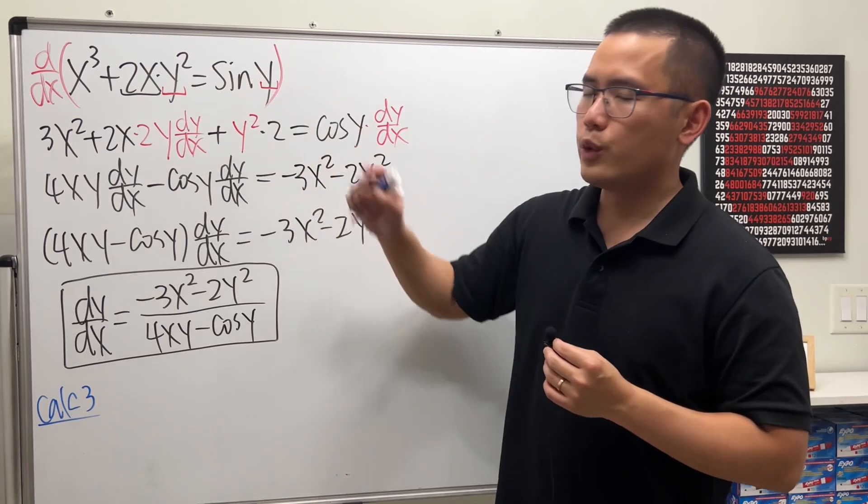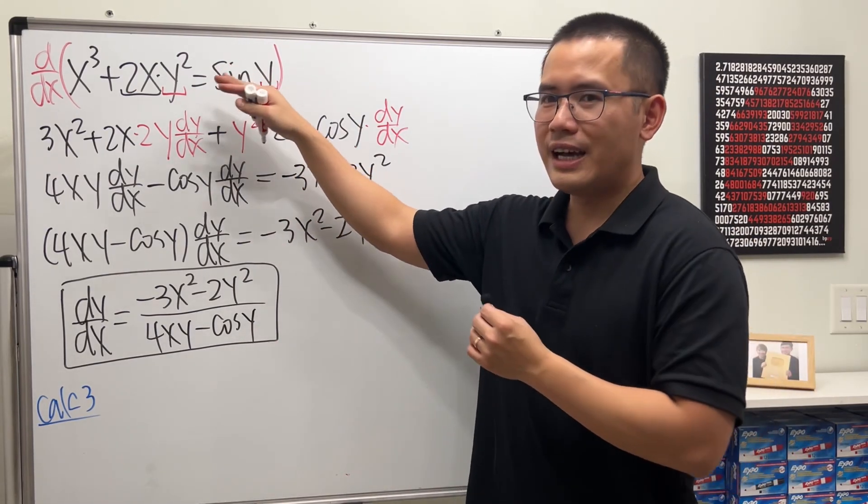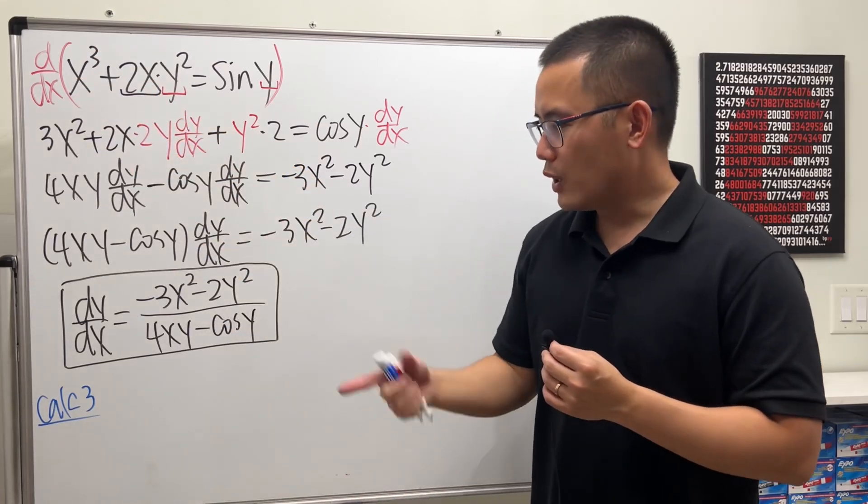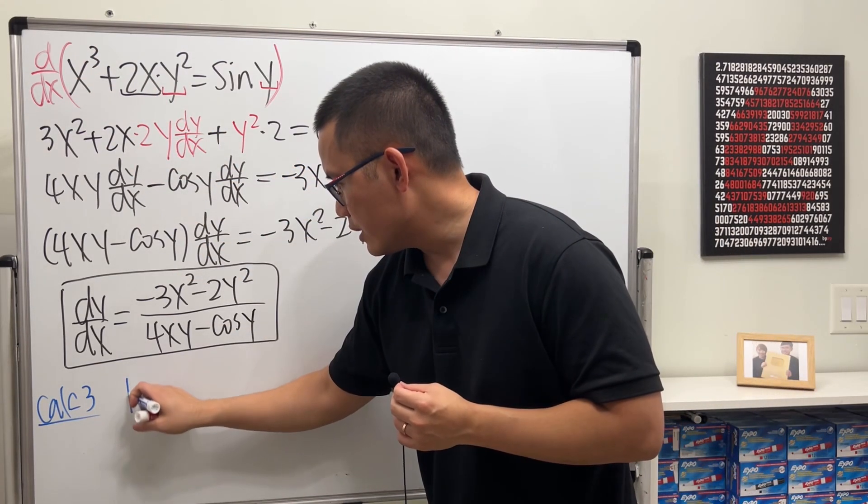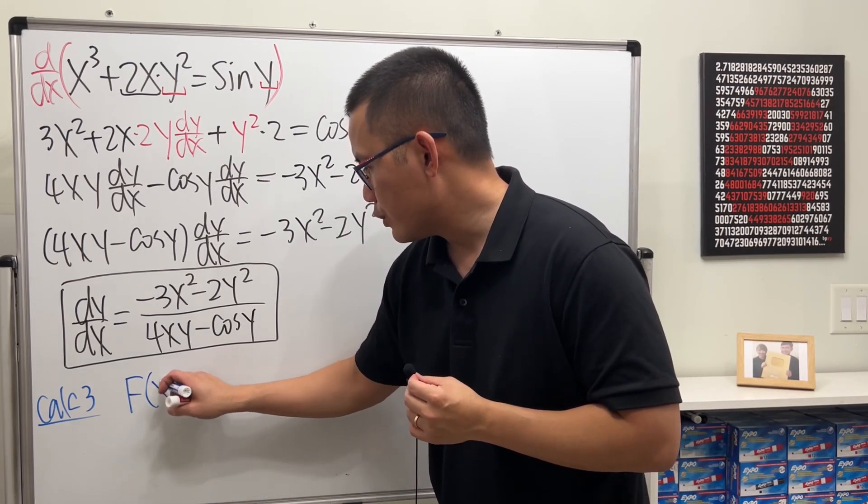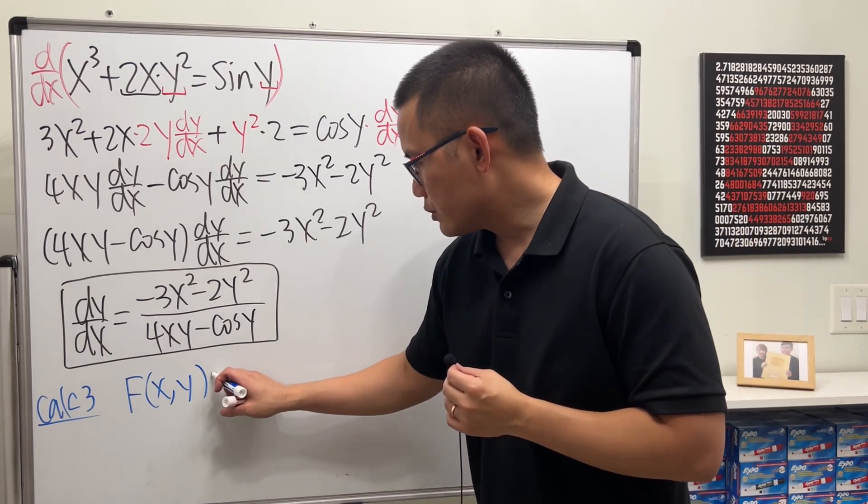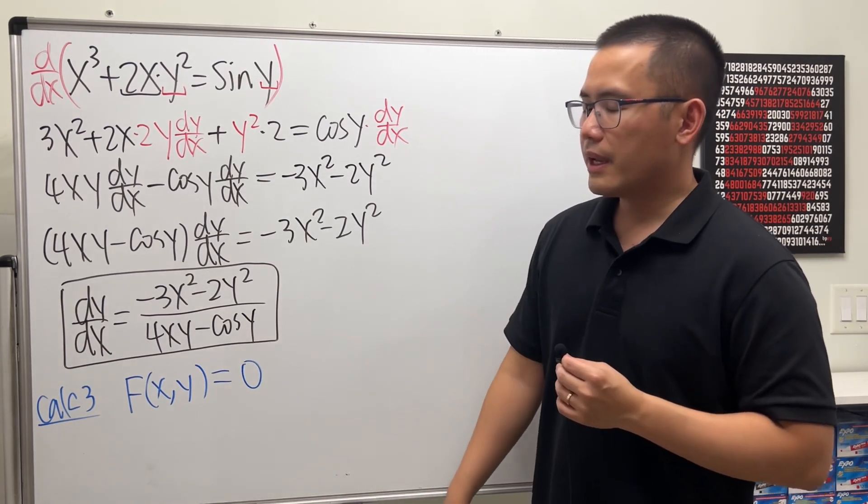And suppose we have an equation like this. We can always put whatever on the right-hand side to the other side. So we can write an equation in this fashion. Let's say a function f of two variables, like this. And suppose this right here is equal to 0. Then in fact, we can talk about the so-called total derivative, or the total differential.